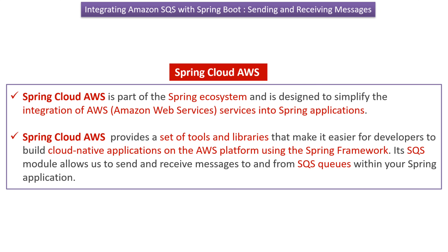Spring Cloud AWS is part of the Spring ecosystem and is designed to simplify the integration of AWS services into Spring applications. It provides a set of tools and libraries that make it easier for developers to build cloud-native applications on the AWS platform using the Spring framework. It has an SQS module which allows us to send messages to SQS queues and receive messages from SQS queues within your Spring application.